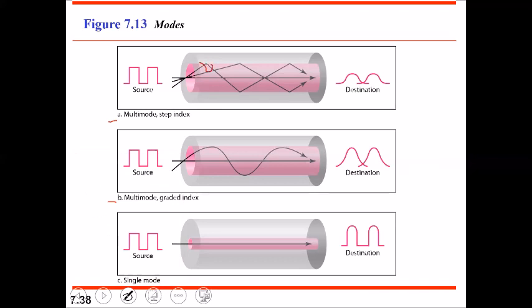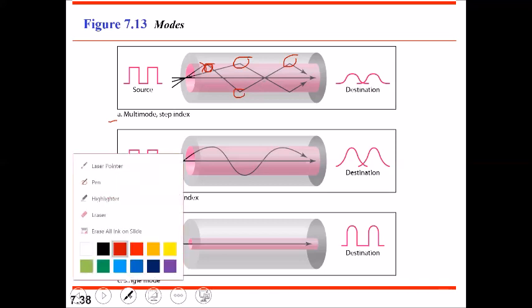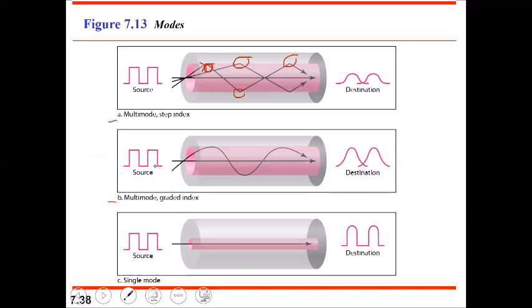Total internal reflection happens at the interface of the core and the cladding. Whenever the light ray propagating touches the interface of the core and the cladding, that is when it gets reflected back. So in multi-mode step index, the density of the core is uniform throughout, the cladding density is lesser, and light rays travel in a straight path until reflected at the core-cladding interface.